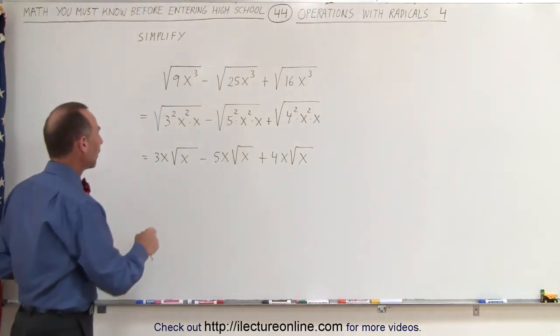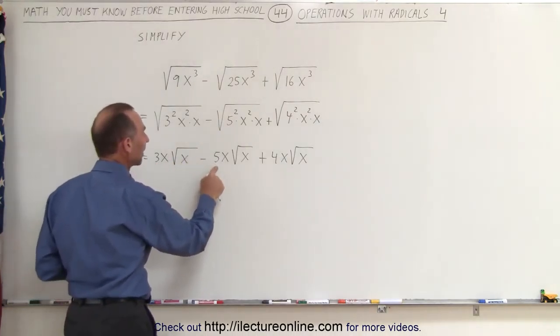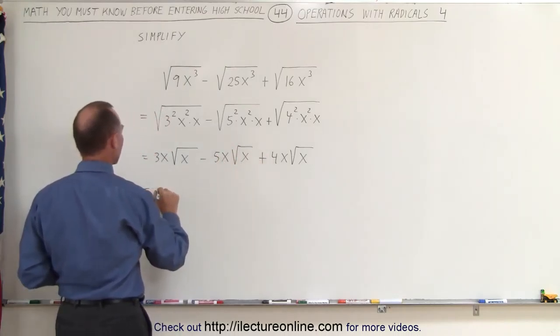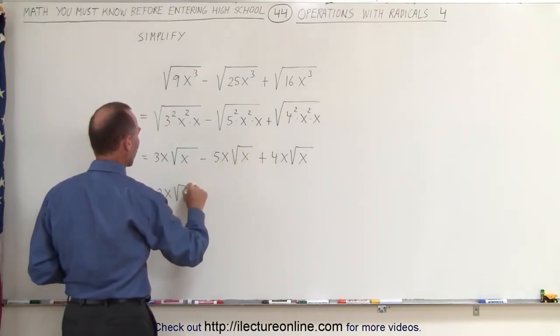We can simply combine them now. We have 3x minus 5x plus 4x. 3 plus 4 is 7, minus 5 is 2. So this can be written as 2x times the square root of x.